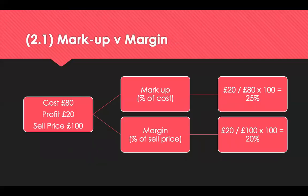When talking about profit percentages, it's important to know whether the discussion is about markup or margin. Both look at the amount of profit made on a product or service, but they're calculated differently. The margin percentage will always be lower than the markup, but with the same cash value of profit. For example, something costing £80 sold at £100 gives a profit of £20. The markup looks at profit as a percentage of cost — 20 as a percentage of 80 is 25% — whereas margin looks at profit as a percentage of the selling price, so 20 as a percentage of 100 is 20%.